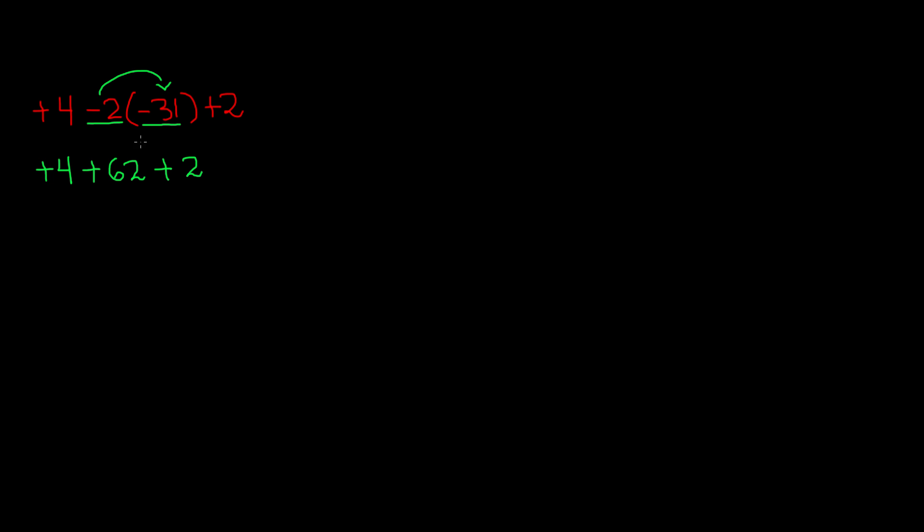All right, now all we have to do is add all these together. So 4 plus 62 gives us 66 plus 2, which gives us 68. So the final answer to this integer problem is 68, or it is really a positive 68, but you really don't need to put the sign in front of it. Because remember, if a number does not have a sign, that means it is always going to be a positive number.